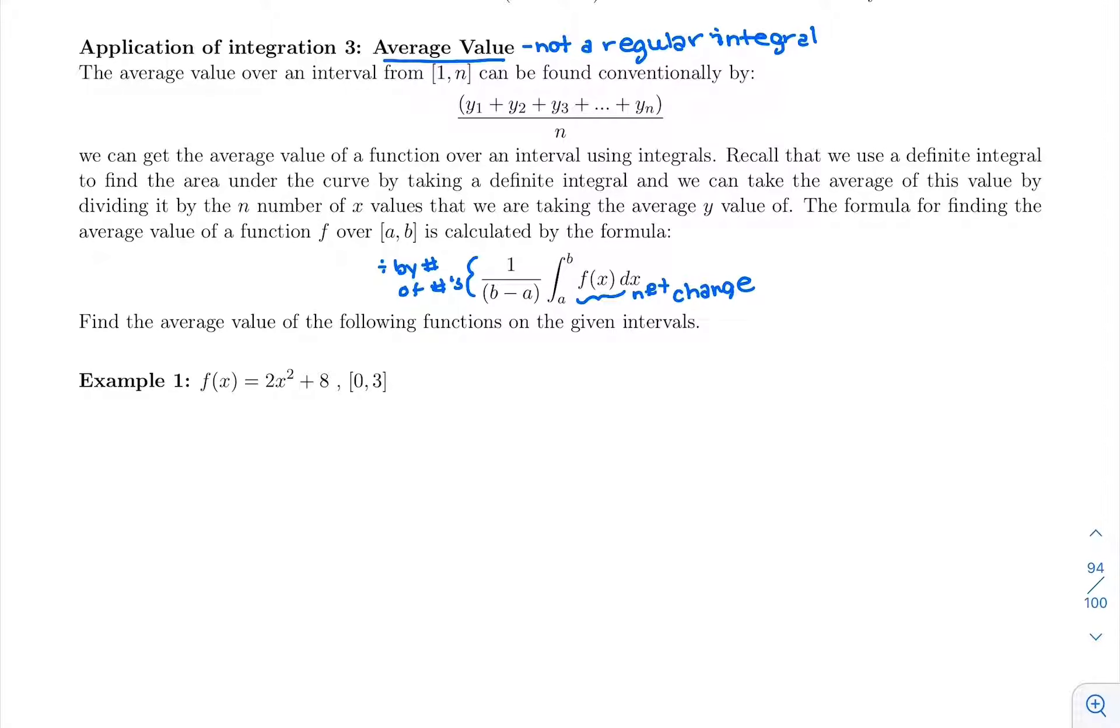A definite integral is used to find the area under the curve, and then we find the average value by dividing it by n, the number of numbers or number of x values that we're taking the average of.